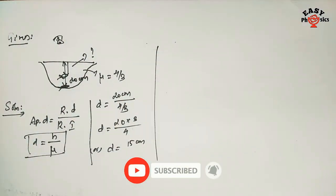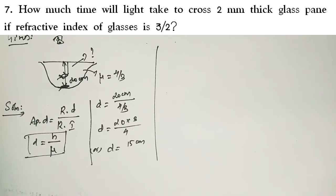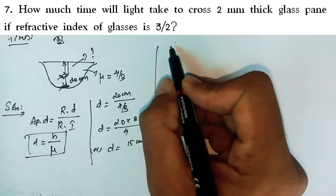The next problem is entirely different — a basic problem. How much time will light take to cross a 2 mm thick glass plane if the refractive index of glass is 3 by 2? This is a basic question with the given data.